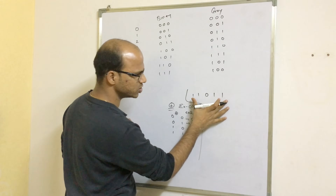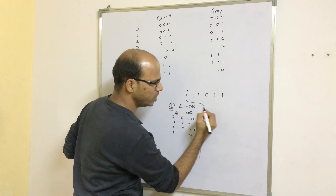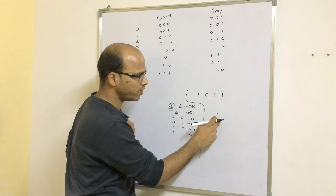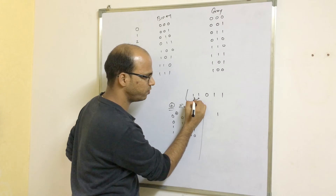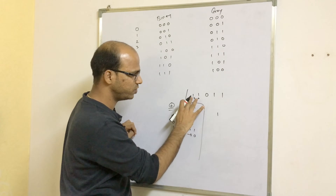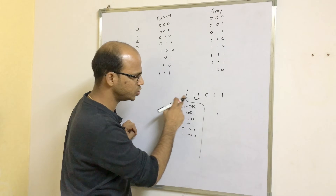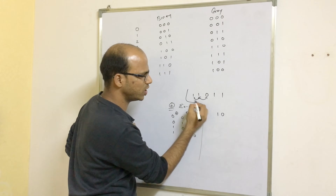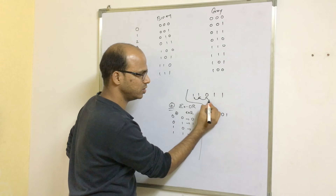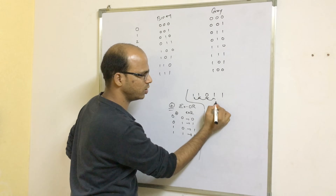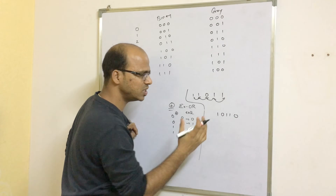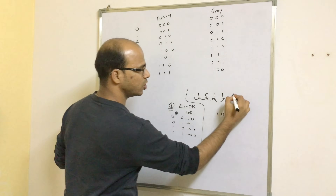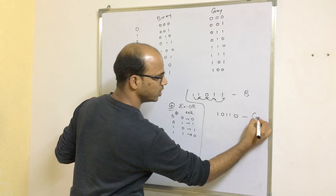Now let's find the gray code for binary 11011. First, take the first bit as it is: 1. Then XOR the first and second bits — 1 and 1 are the same, so the answer is 0. Then XOR the second and third — different, so 1. Then the third and fourth — different, so 1. Then the fourth and fifth — same, so 0. The gray code is 10110.